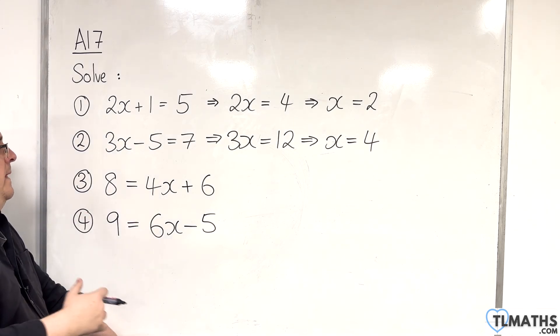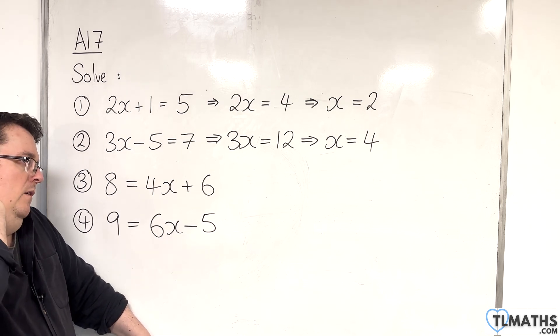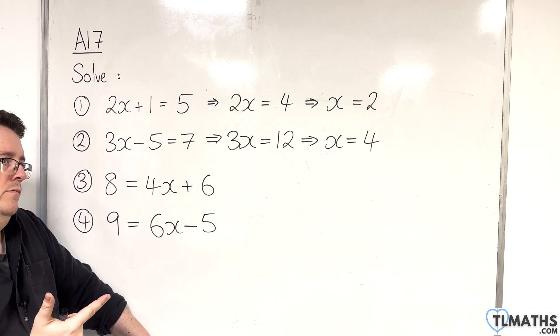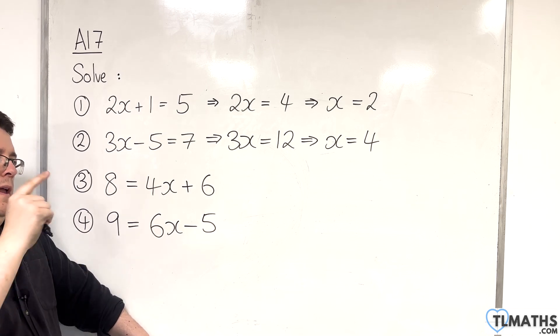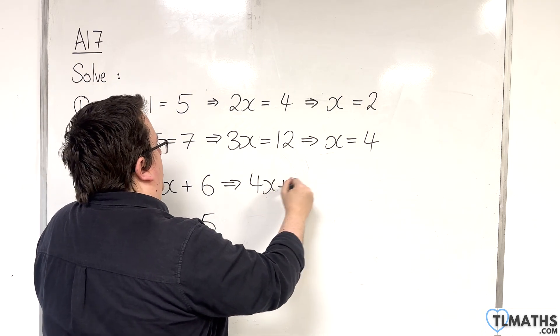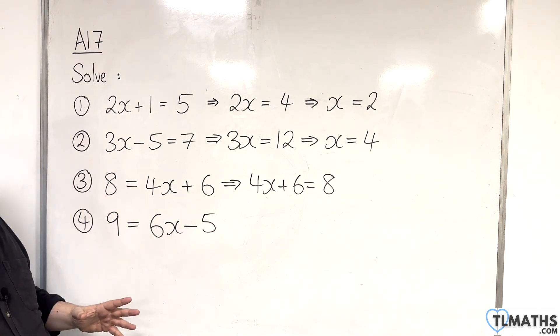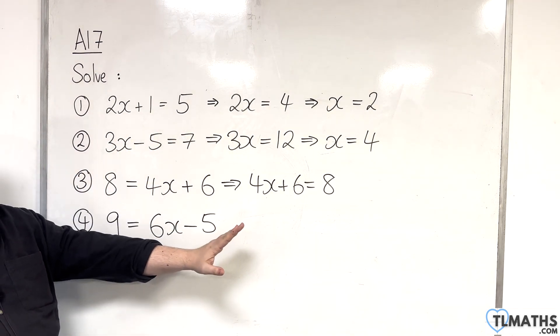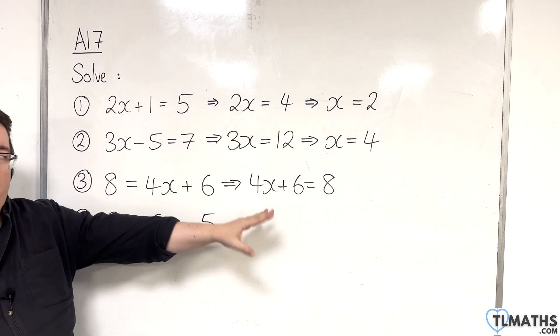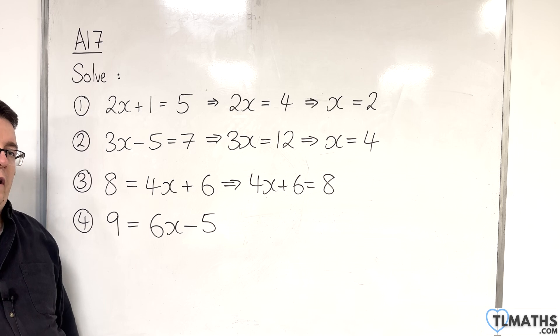Right, question number 3. We have 8 equals 4x plus 6. The x is on the right-hand side now. Now, before we go through this example, swapping the equation round to make 4x plus 6 is equal to 8. So, swapping those places is perfectly fine. I've always done that at that last stage. But if you prefer, just do it at the first stage. There's nothing stopping you from writing it that way round right from the outset and solving the equation like normal. It's perfectly fine to do that.